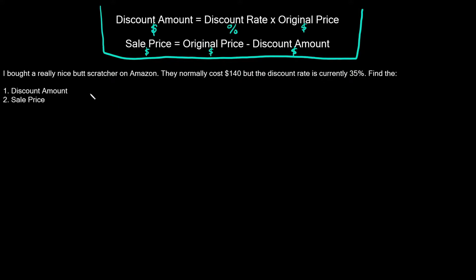Let's jump into our first example. I bought a really nice butt scratcher on Amazon — they normally cost $140 but the discount rate is currently 35 percent. We're going to find first the discount amount and then the sale price.